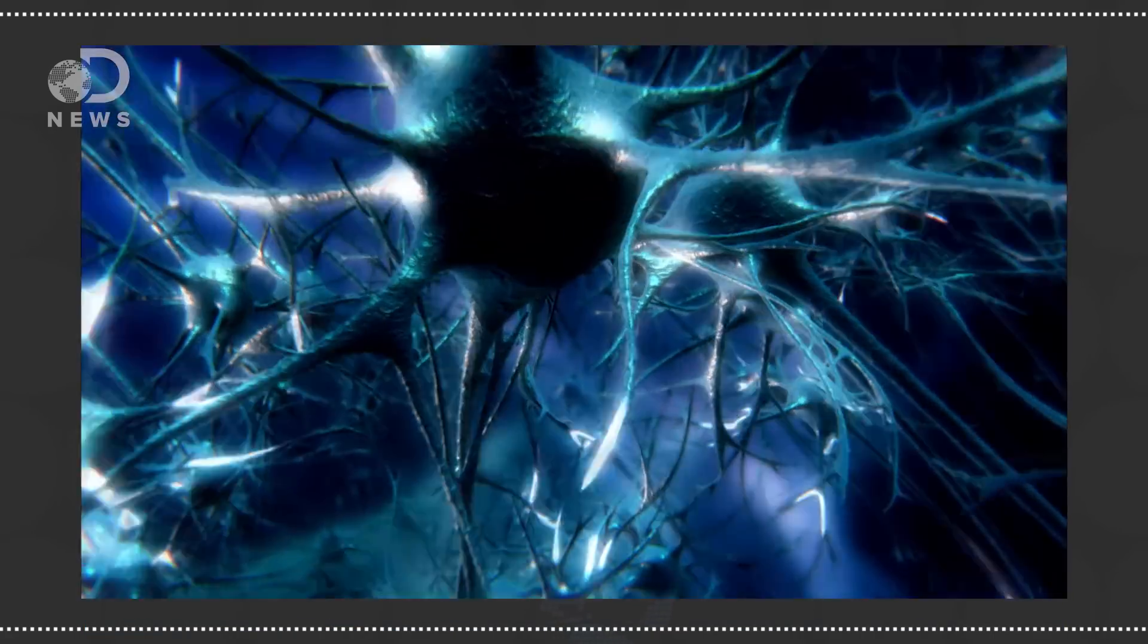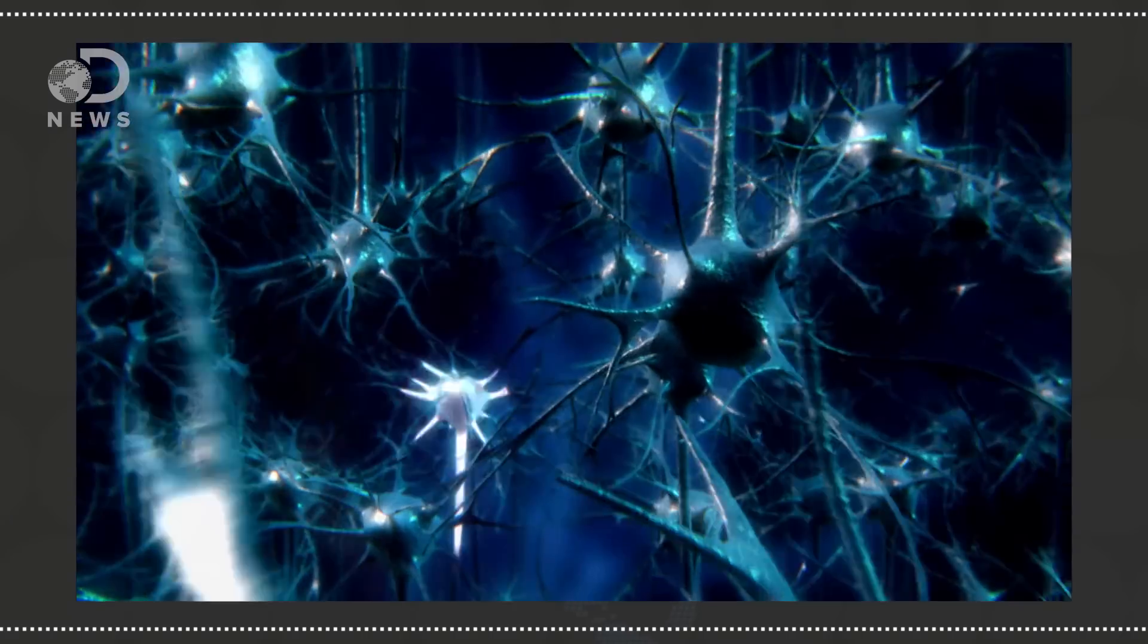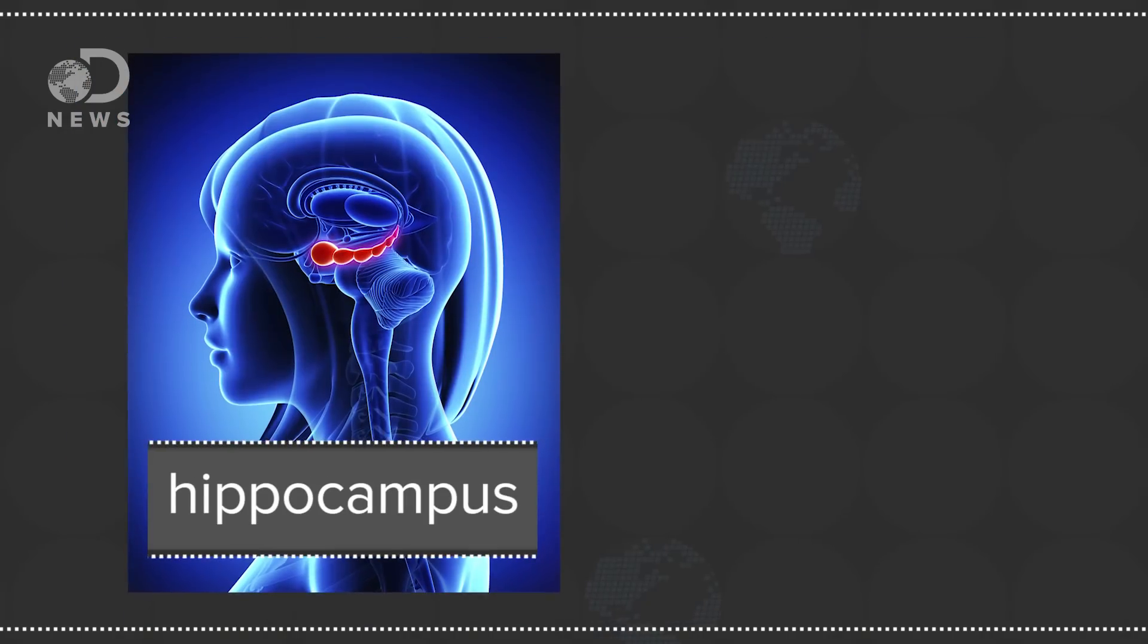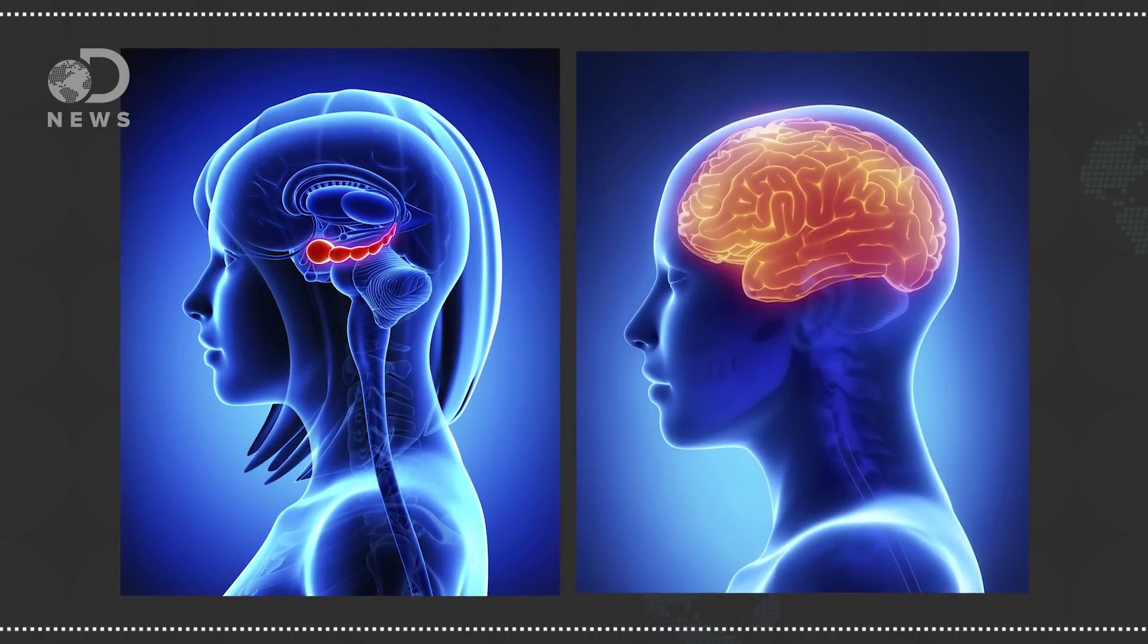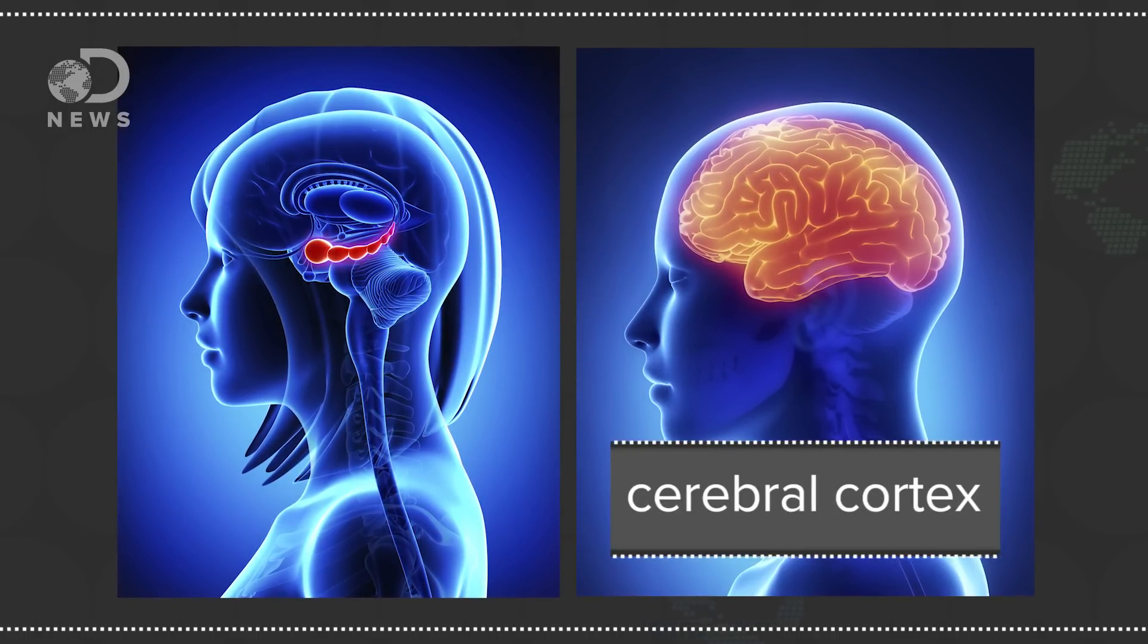That electrical energy is then fired across the brain through a network of neurons until it reaches the hippocampus, a sort of memory data bank. Though some recent studies suggest that certain long-term memories might also be stored in the cerebral cortex.